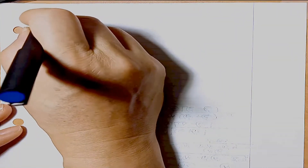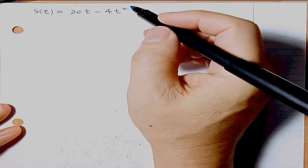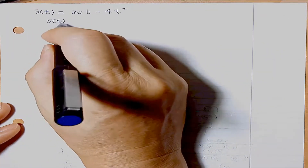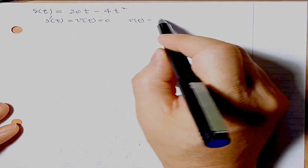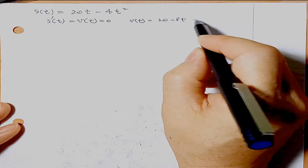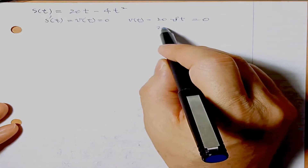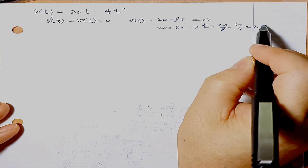Question number three: for a ball thrown vertically upward, its height at t seconds is s = 20t - 4t² meters. What is the maximum height? Maximum height occurs when velocity (the derivative) equals zero. The derivative is s' = 20 - 8t. Setting this to zero: t = 20/8 = 2.5 seconds.